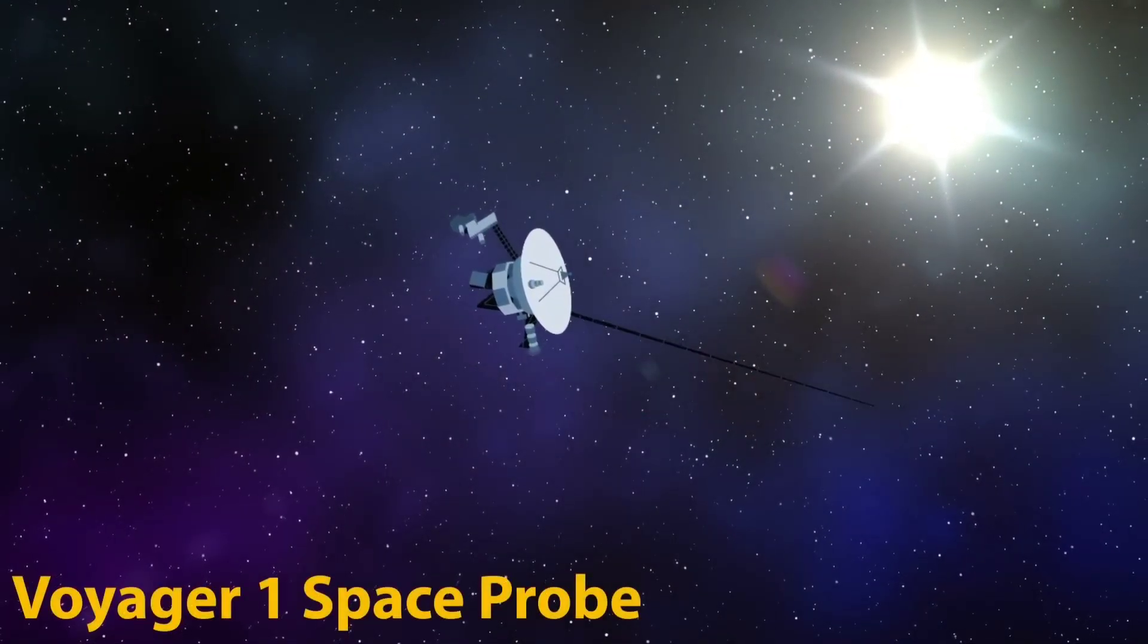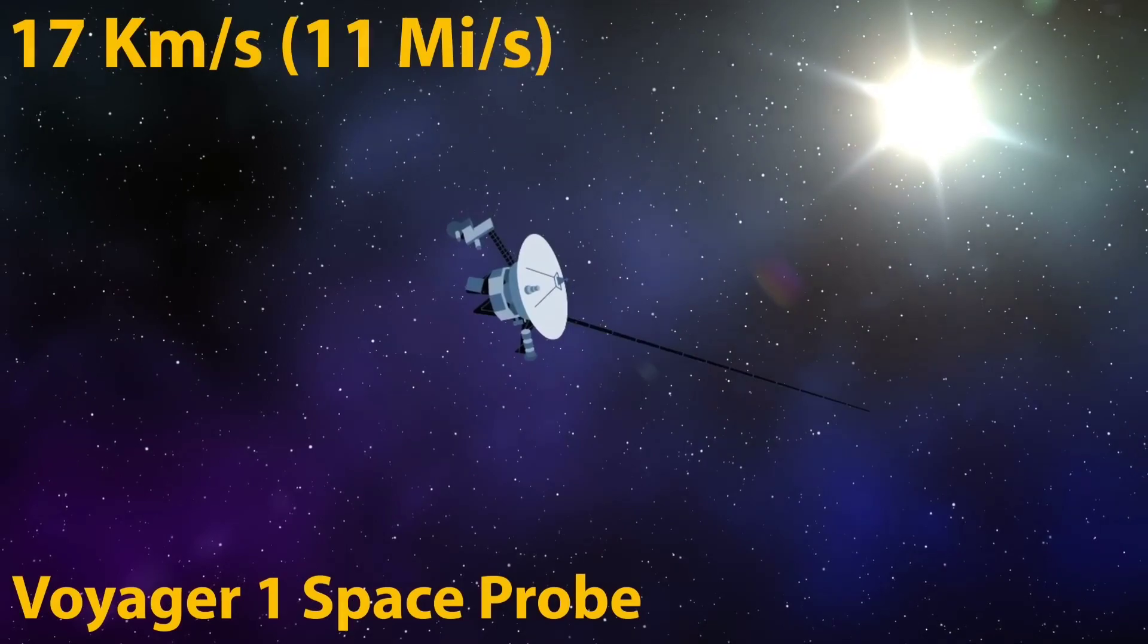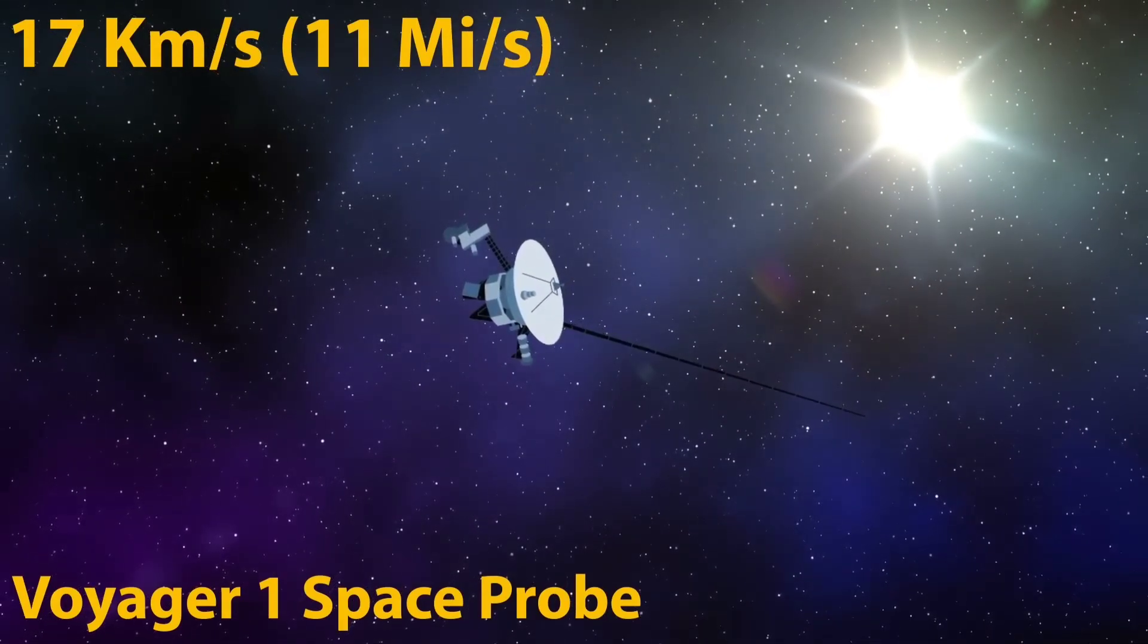Voyager 1 is currently traveling at 17 kilometers every single second, but even at that speed it won't break out of the reach of our solar system for another 30,000 years.